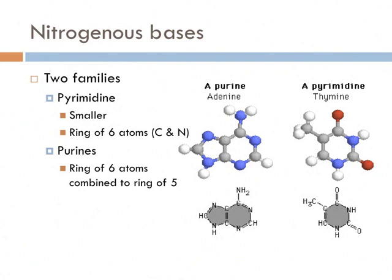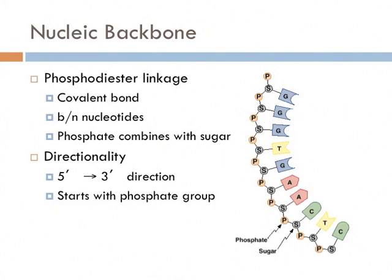Of the four nitrogenous bases, they form two different families determined by their shapes. Pyrimidines are the smaller of the two and include a single ring of six carbon and nitrogen atoms. Purines are their bigger cousin — they also have a ring of six atoms, but attached to that is another ring, making a sort of figure eight. There are two pyrimidines — thymine and cytosine — and two purines — adenine and guanine. Adenine links up with thymine, and cytosine links up with guanine. You always see a purine with a pyrimidine.